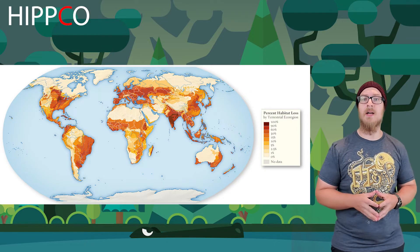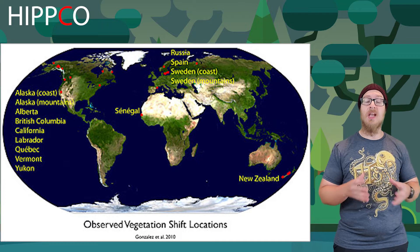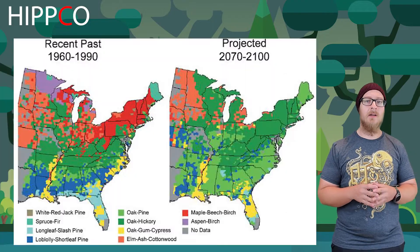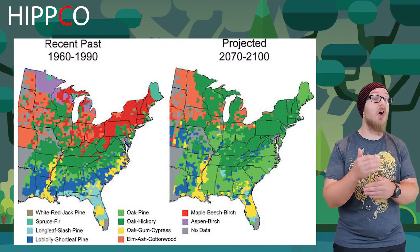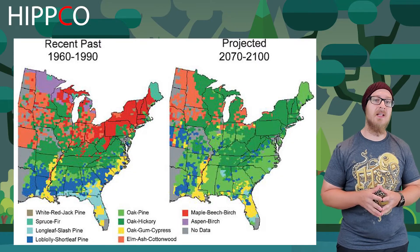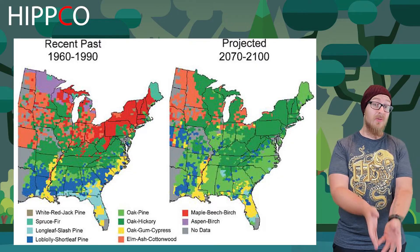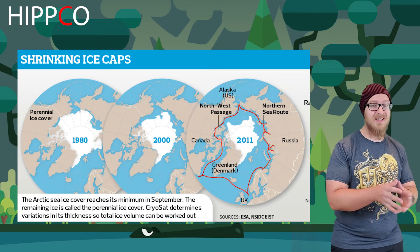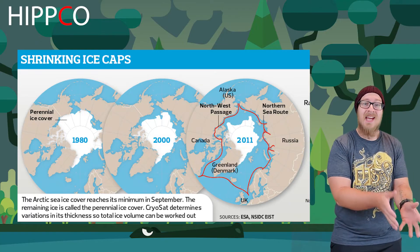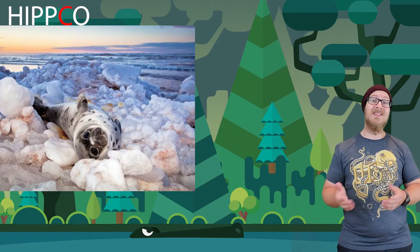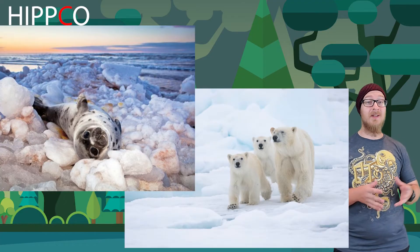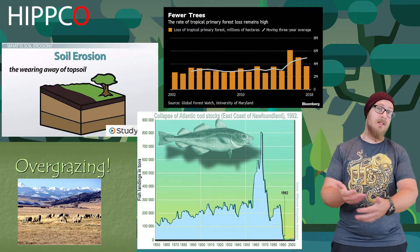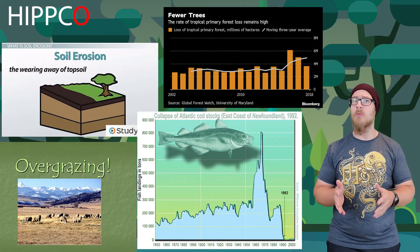Climate change can cause habitat loss through changes in temperature, precipitation, and sea level rise. A map shows areas where the changing climate is causing shifts in the range of plants specific to each biome in the United States, with specific tree species also shifting northward as northern regions become warm enough to support species previously found only farther south. The loss of Arctic ice is also a loss of habitat and hunting grounds for species like seals and polar bears.